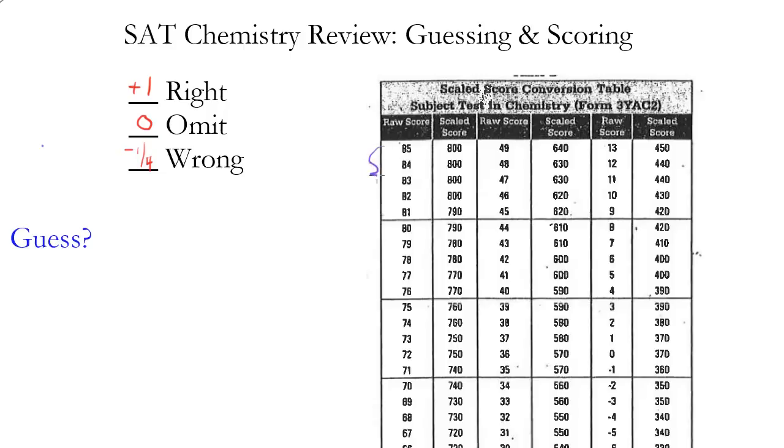Notice you can get pretty much three wrong and still be in the 800 region, more or less, though with the minus one quarter penalty, it makes things a bit trickier. But notice you can still get three wrong.